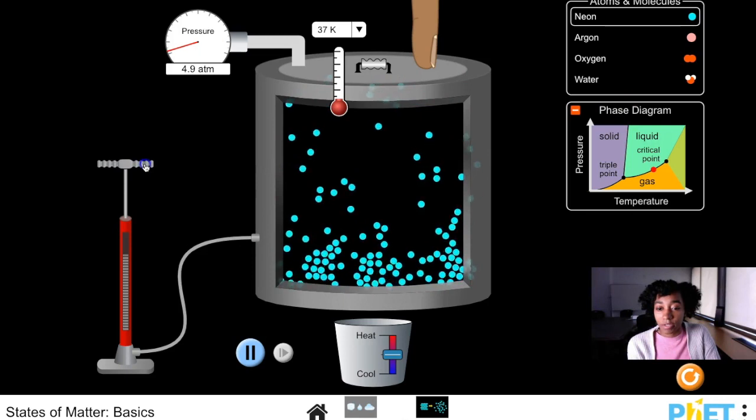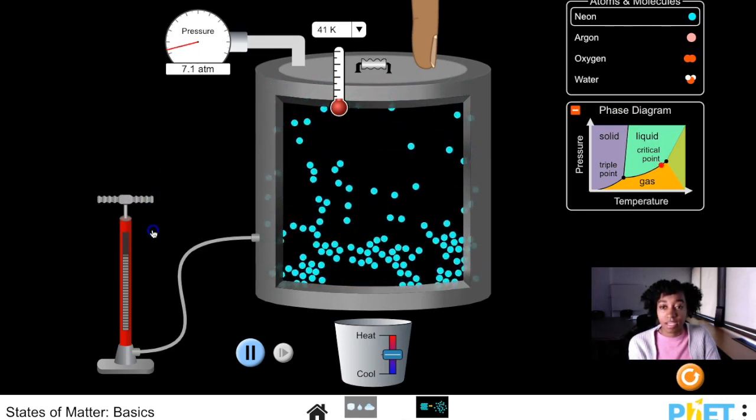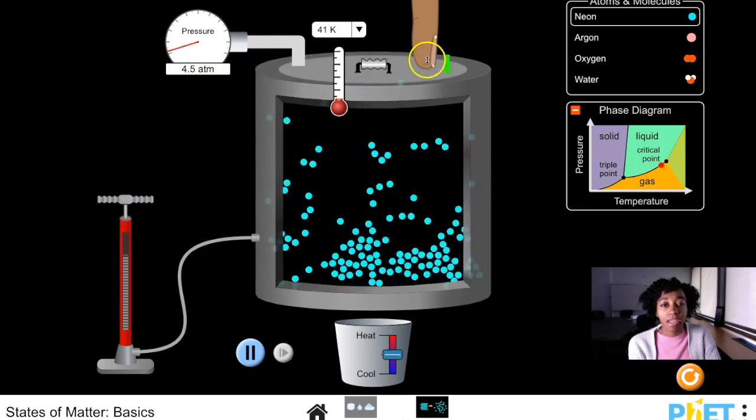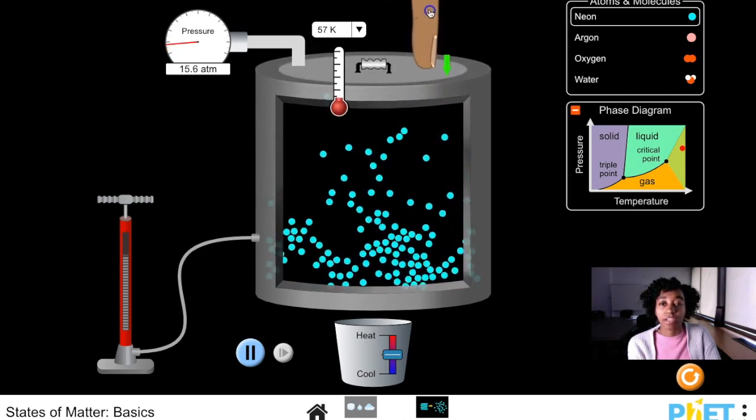On your left, we can increase the number of atoms or molecules that are present in the container, which as you can see has an effect on the pressure, and we can manually adjust the pressure by clicking and holding down on this finger here.